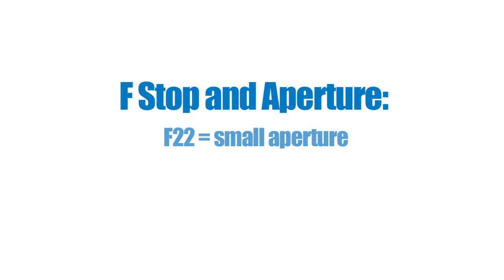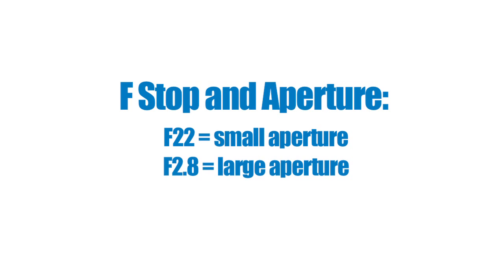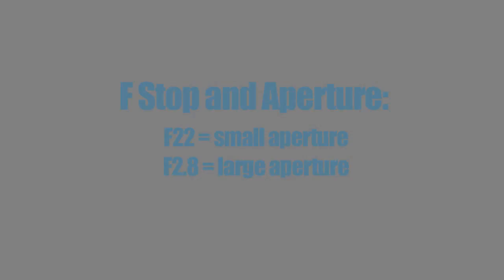The bigger the number, the smaller the hole. So an aperture like f22 is a very small hole, and a number like 2.8 gives you a very large hole.